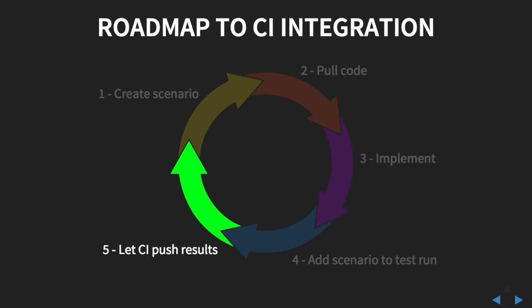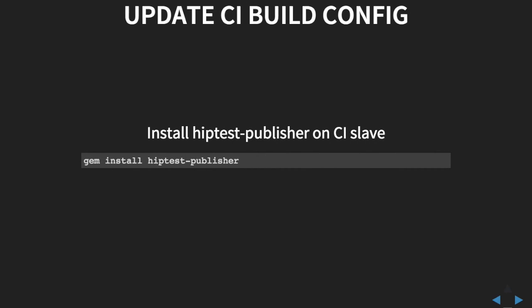Once you've created a test run for continuous integration and implemented the action words for the scenario, you can add this scenario to the test run for integration. Once this is done, the CI process is ready to execute this scenario. Integrating HipTest with your CI system is pretty simple — it's just a few steps. On the machine or slave that will execute the CI task, you need to get HipTest Publisher installed. It's the same process as on the developer machine: just run gem install hiptest-publisher, and it's ready to go, as long as you've got Ruby on the machine.